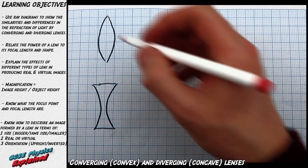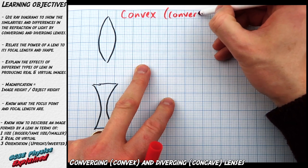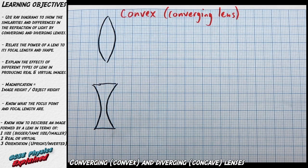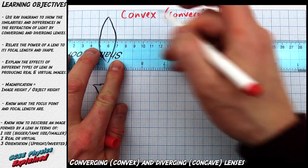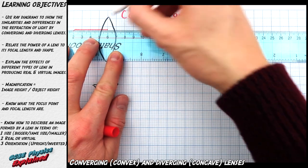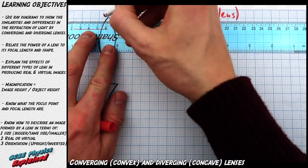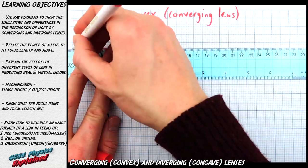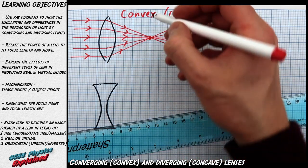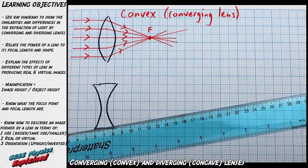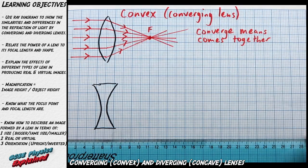Now you need to know how light travels through these lenses. This convex lens is also known as a converging lens because it converges the light, which means it brings the light together. When light travels through it, the light all meets at a certain point. If I draw five rays of light entering the lens, all the light focuses at that point F. So the light comes together — it converges. Converges means come together.